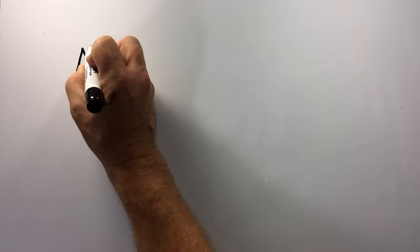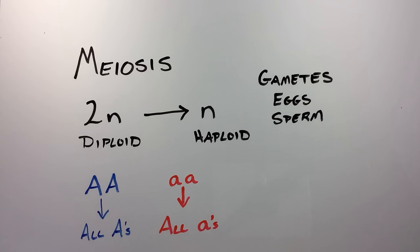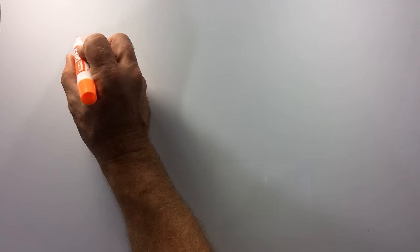In meiosis, diploid cells give rise to haploid gamete cells through a series of cell division steps. If the individual is homozygous big A, all of their gametes will contain big A alleles. Homozygous little a individuals will also only produce little a alleles in their gametes. But if individuals are heterozygous, half of their gametes will contain big A alleles and half will contain little a alleles.